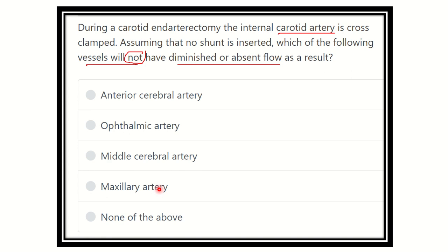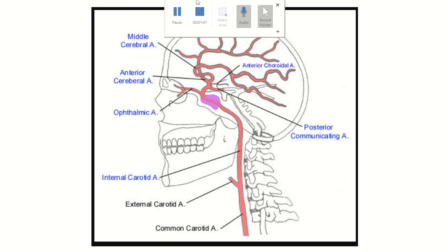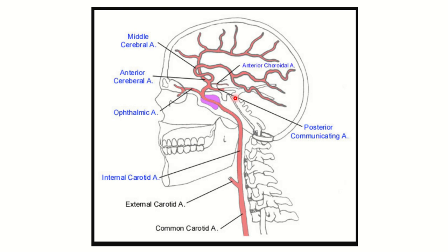We have to find out which option is not a branch of the internal carotid artery. We can see this is the common carotid artery, here the external carotid artery and internal carotid artery. Due to the carotid artery being cross-clamped at this space, the internal carotid artery and its branches will have diminished or absent flow, but other areas will not be affected.